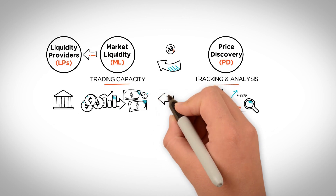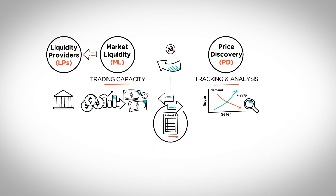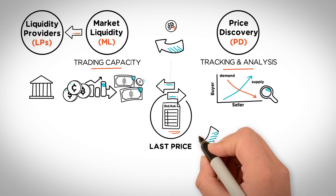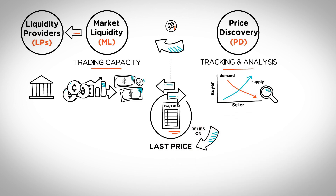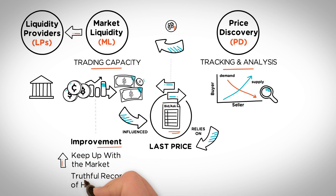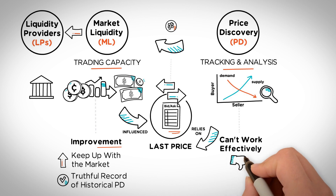The relationship between market liquidity and price discovery lies in the historical data recorded by the market. The exchange's price discovery relies on the recorded last price that was traded at regular time intervals, giving a real-time market price. Because of this, the record is influenced by the liquidity available on the order book. An improvement in liquidity increases an exchange's ability to keep up with market demands, and therefore provides a more truthful record of historical price discovery. As such, price discovery cannot work effectively in the absence of market liquidity.